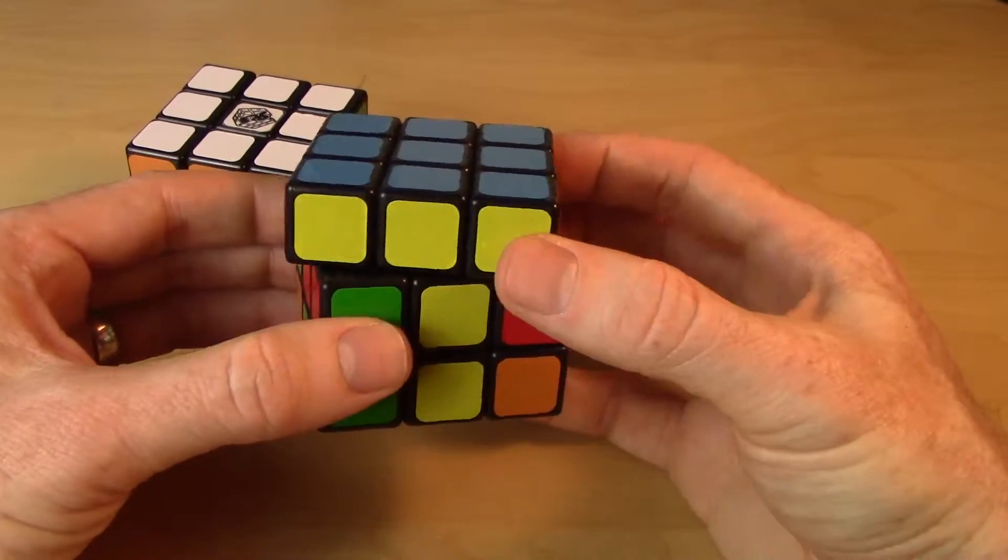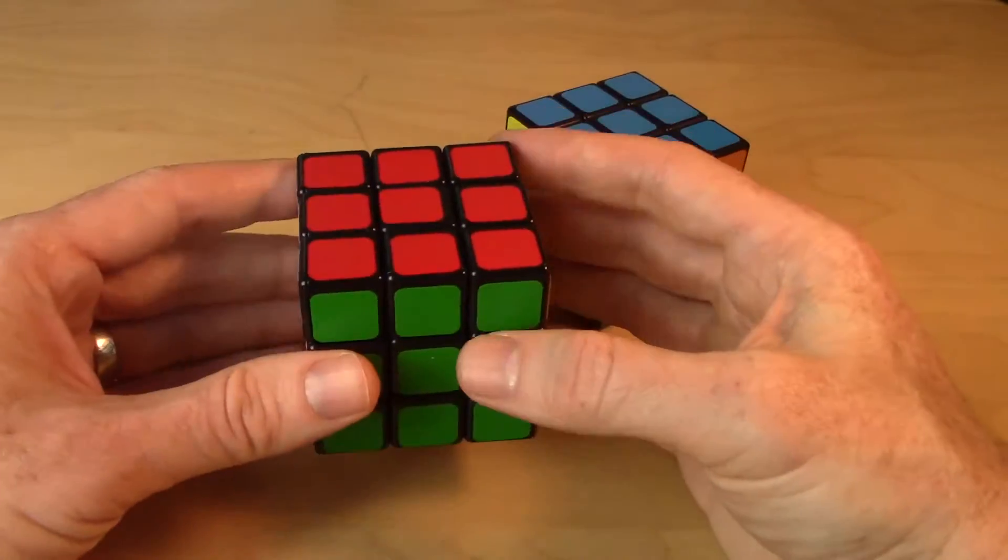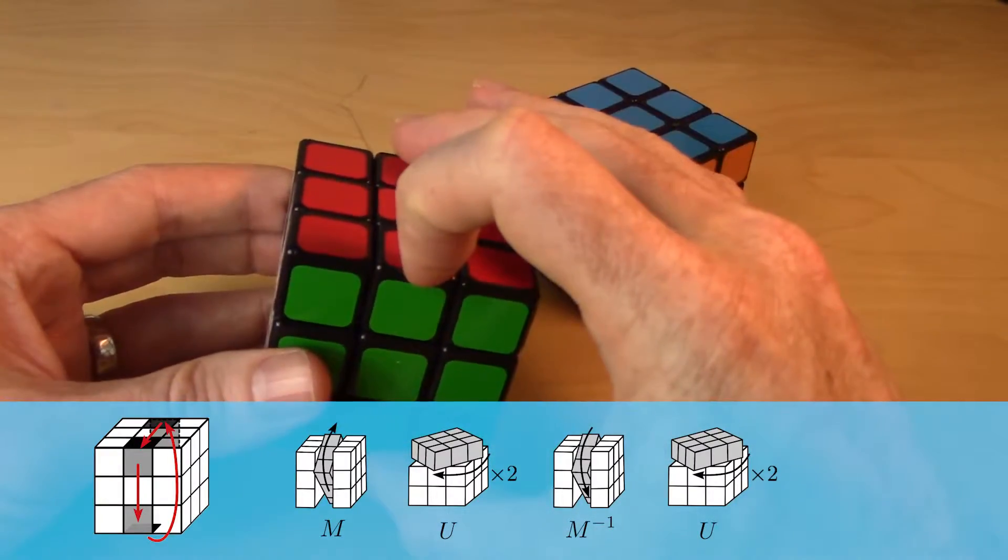Now that we've done the complete solve, we learned a 3-cycle for edges. The 3-cycle for the edges were these three here.